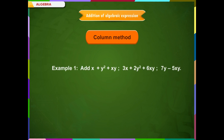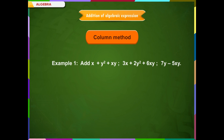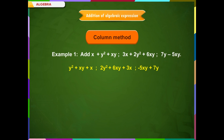Example 1 (Column Method): Add x + y² + xy, 3x + 2y² + 6xy, and a third expression. Step 1: Arrange all expressions in decreasing order of degrees. The first expression becomes y² + xy + x; the second becomes 2y² + 6xy + 3x; and the third expression becomes −5xy + 7y.